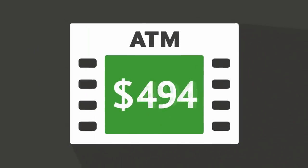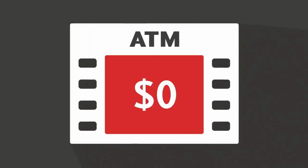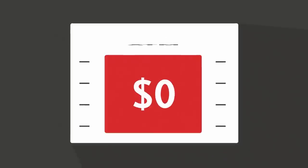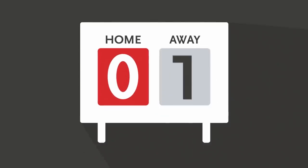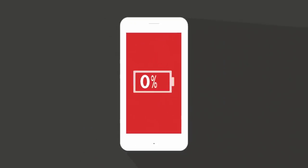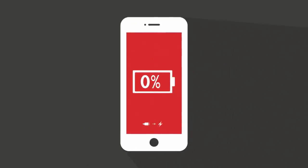Zero. It shows up every day, usually as the villain, not the hero. But an indexed universal life insurance policy allows zero to be your hero.